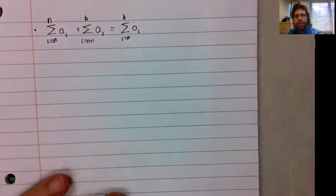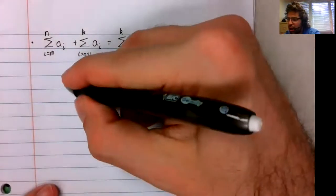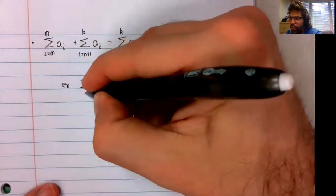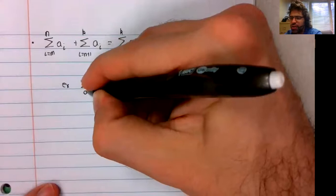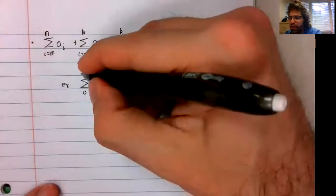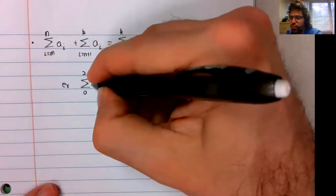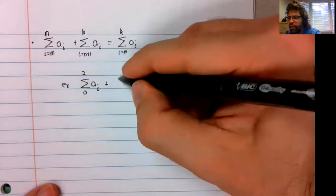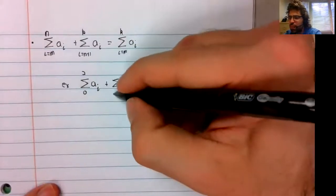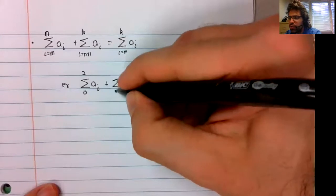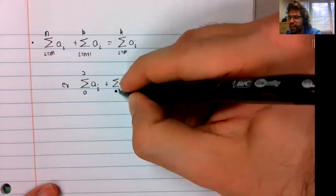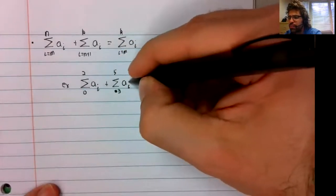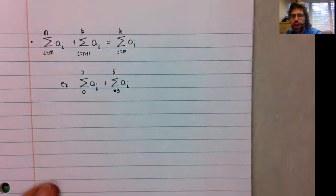And again, if this looks arcane, I think an example will clear it right up. The sum from zero to two of a sub i plus the sum from three to five of a sub i.